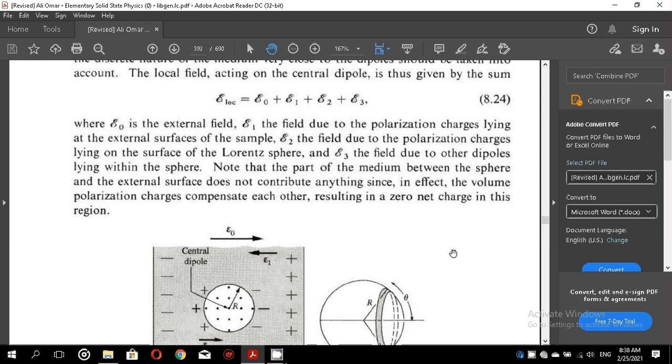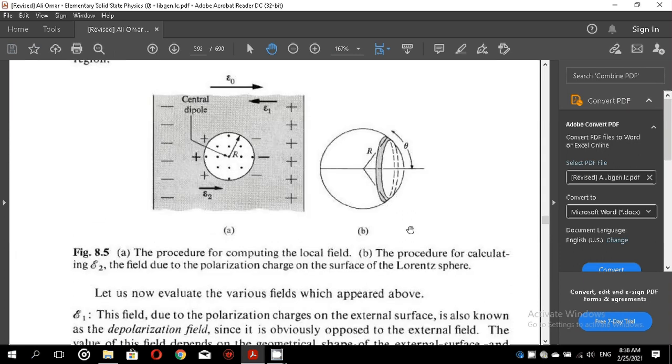In effect, the volume polarization charges compensate each other, resulting in a zero net charge on this region. The figure 8.5 facing you explains and illustrates these various fields very clearly.